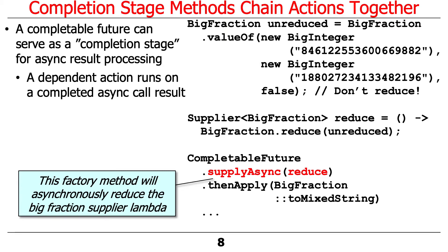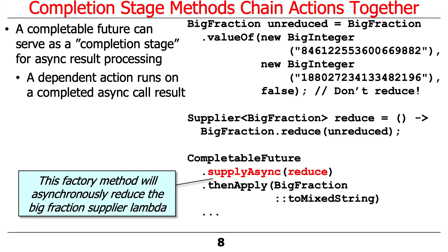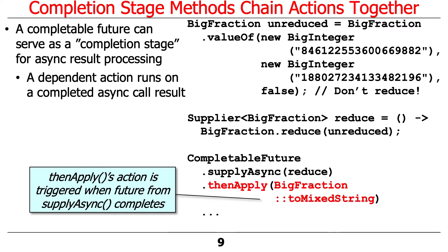We call CompletableFuture.supplyAsync and pass in the reduce supplier. That arranges to have the supplier run in a background worker thread in the common fork-join pool, as we saw from the discussion of the internals of the factory method supplyAsync. supplyAsync returns a CompletableFuture, and that CompletableFuture will be triggered when the asynchronous reduce operation finishes. When supplyAsync finishes doing the reduction, then and only then will the thenApply completion stage method be called back, which will take the result — a reduced big fraction — and convert it into a mixed fraction as a string.